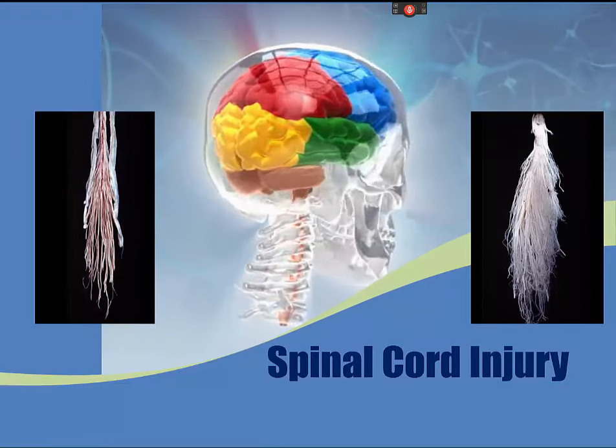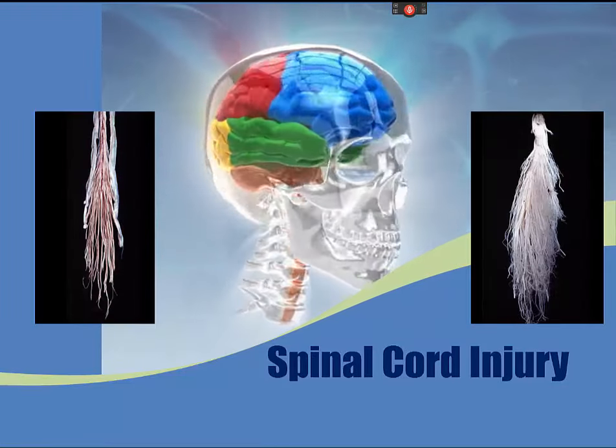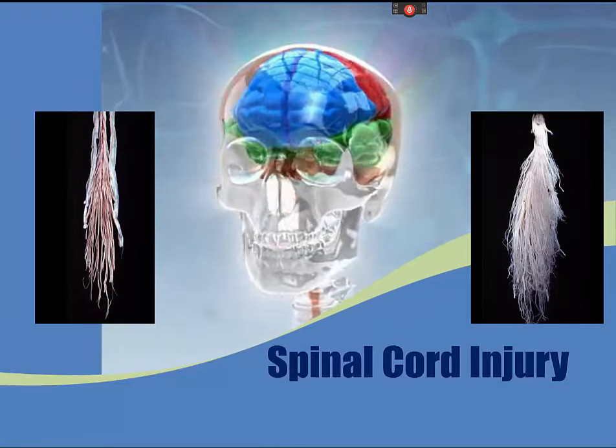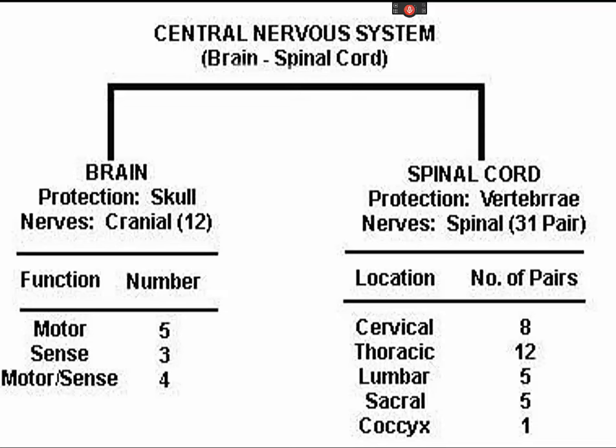This is a review of spinal cord injury. The central nervous system consists of the brain and the spinal cord. It contains millions of nerve cells. If you slice through some fresh brain or spinal cord, you will find some areas that appear gray while other areas appear rather white.